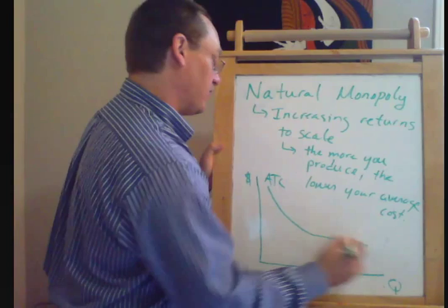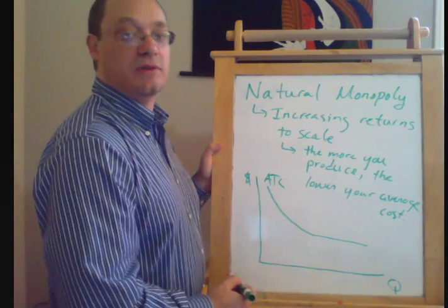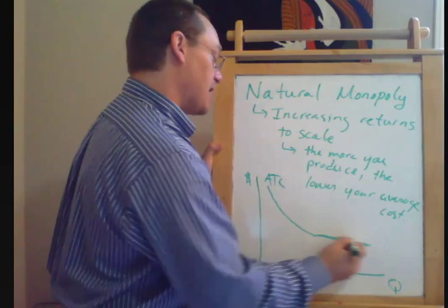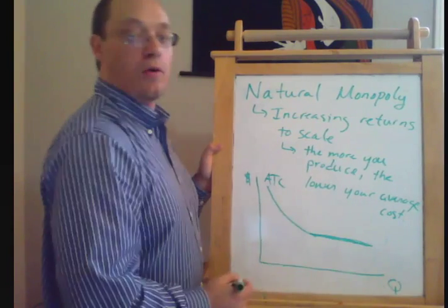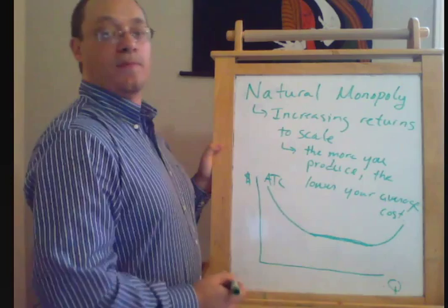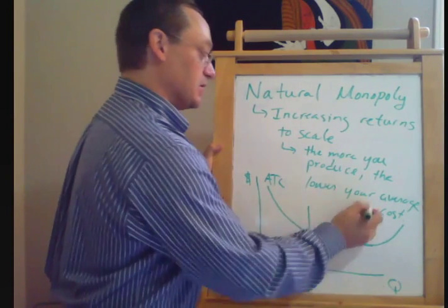If it's flat, then we have what's called constant returns to scale. So size doesn't give an advantage or a disadvantage. And if it's upward sloping, then we have decreasing returns to scale.